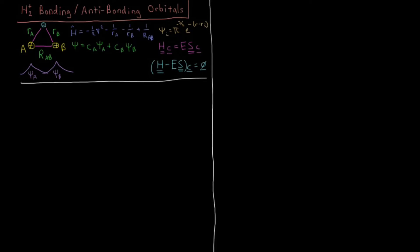We previously looked at the energies of the H2+, the hydrogen molecular ion, which is the simplest molecule you can possibly get, where we have two nuclei and one electron. After looking at the energies, we're now interested in looking at what the wave functions are and what this means in terms of molecular wave functions and chemical bonding.